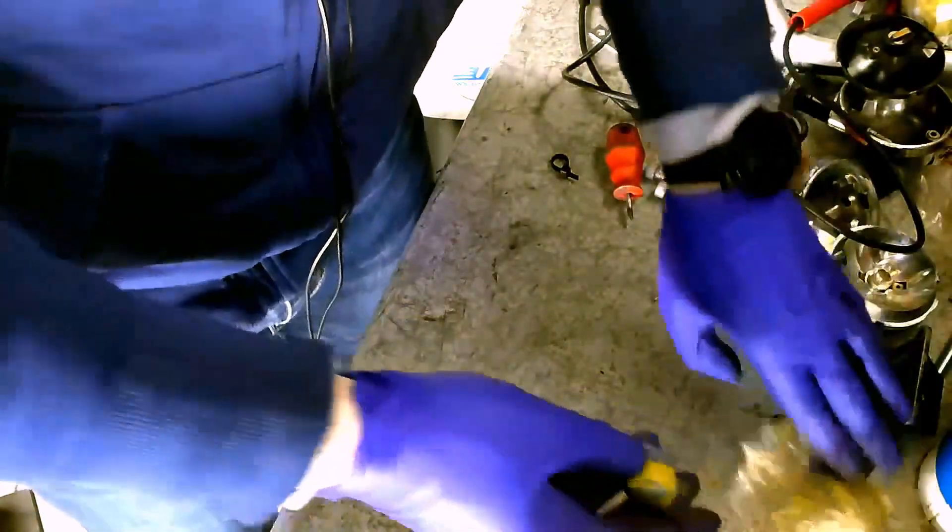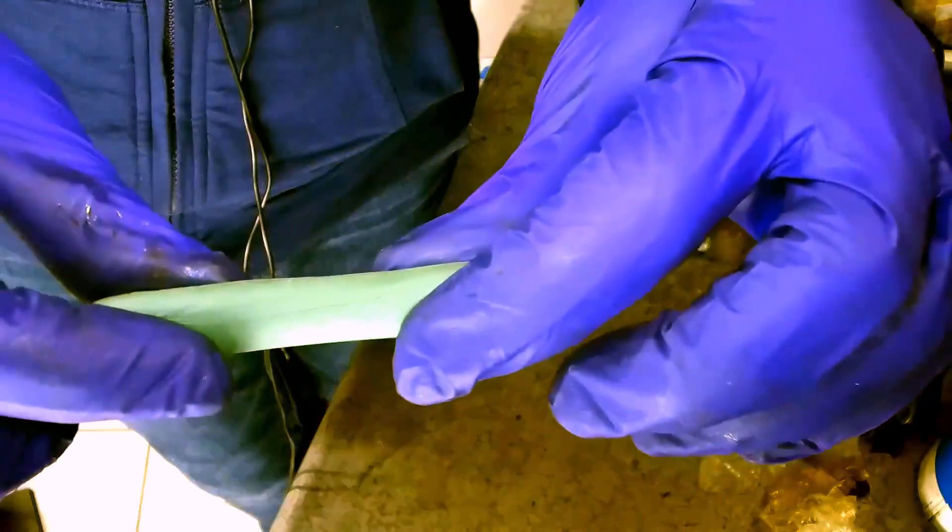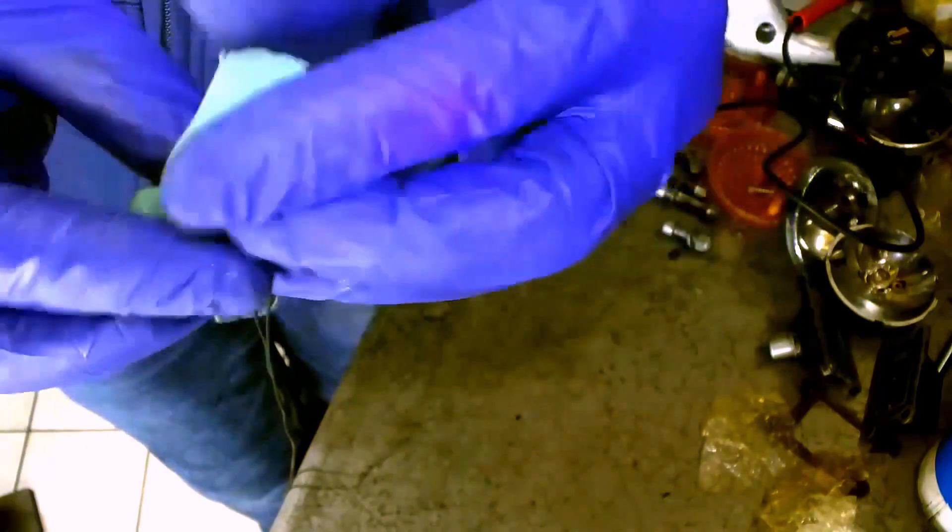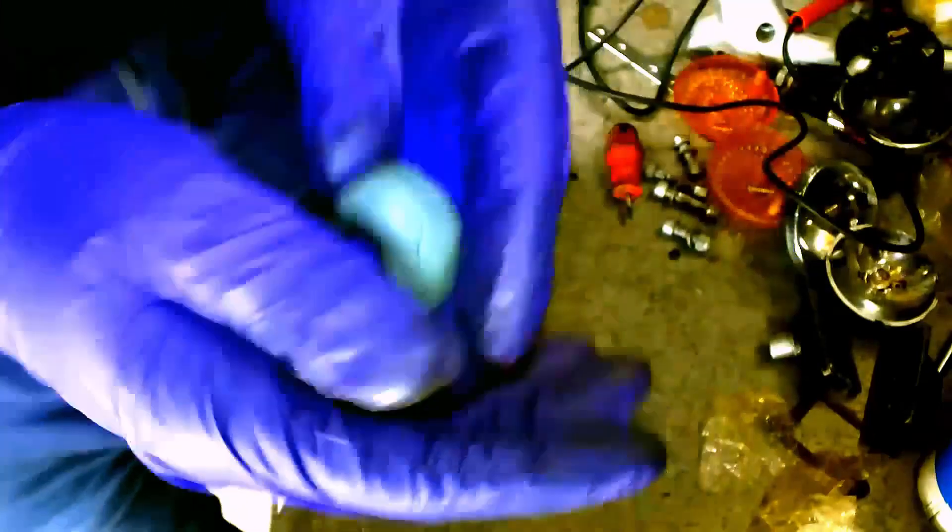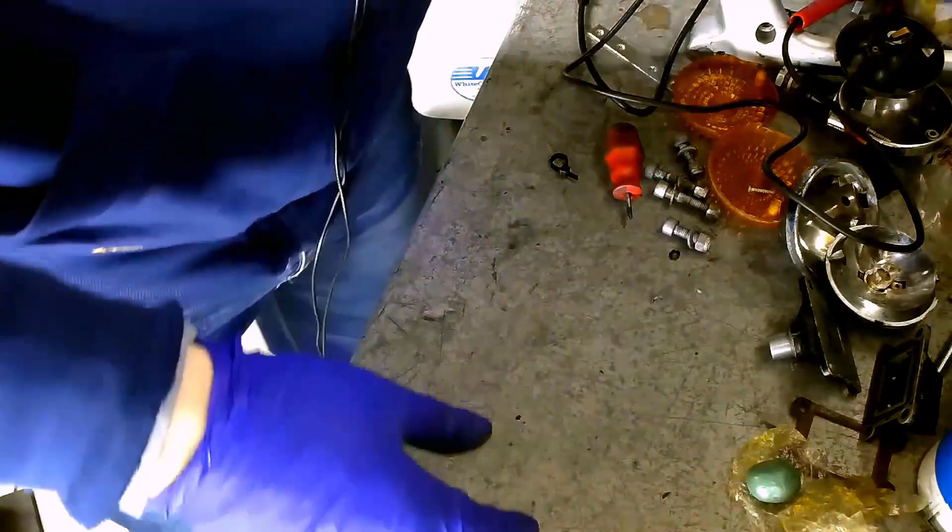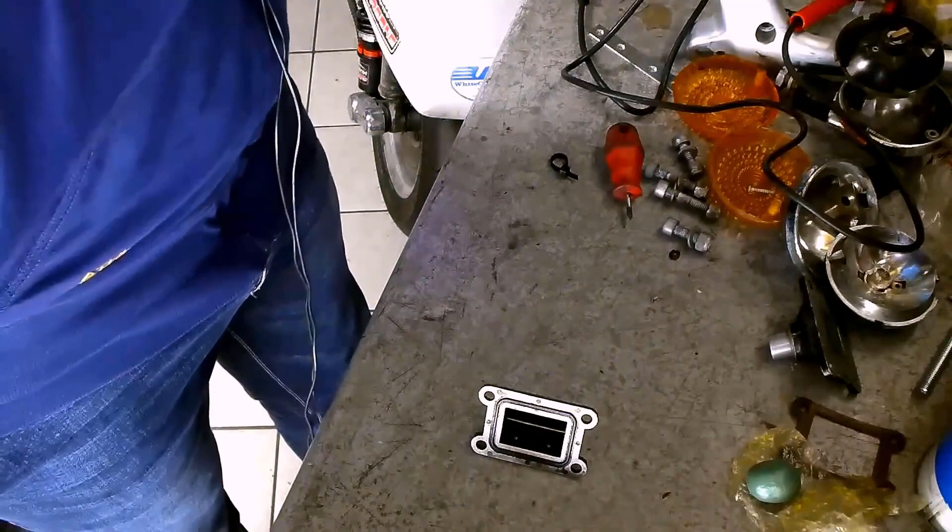So let's mix the resin. Here it is. We're ready. Let's break it. The inside is completely green, so it means that the resin is ready. Let's act very quickly because it has already started catalyzing. Very quickly, let's go and get our reed valve pack and put the envelope.